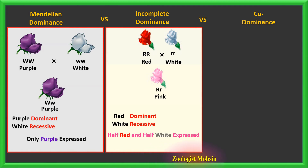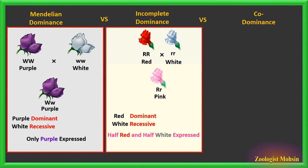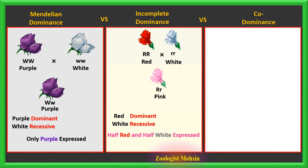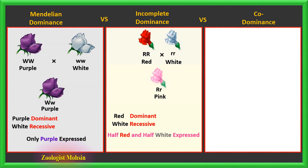This is called incomplete dominance, because red could not completely mask the white, nor could it express itself completely. In such non-Mendelian inheritance, both alleles are expressed halfway, and a new phenotype — usually a mix of the parental phenotypes — is produced. Other examples of incomplete dominance include feather colors in chickens (black × white = blue) and Tay-Sachs disease in humans.